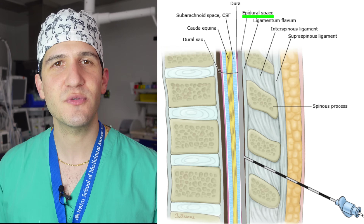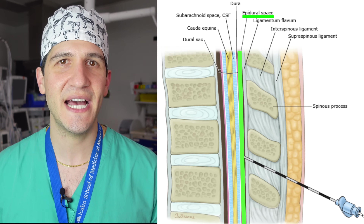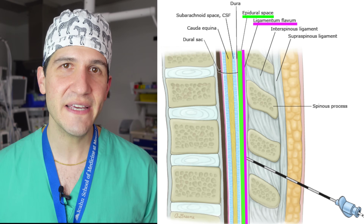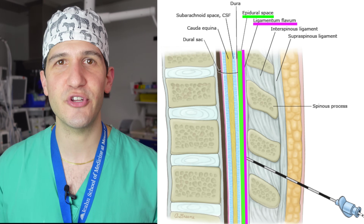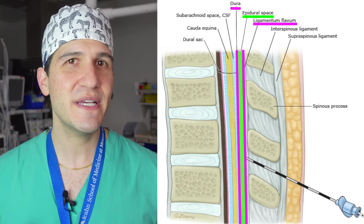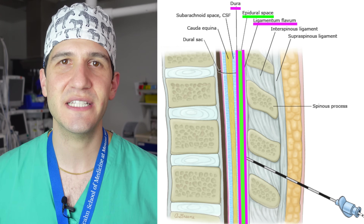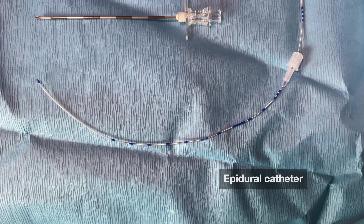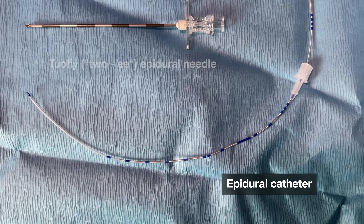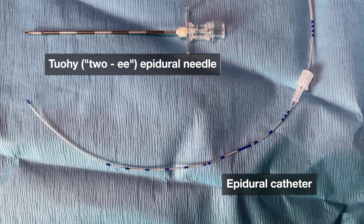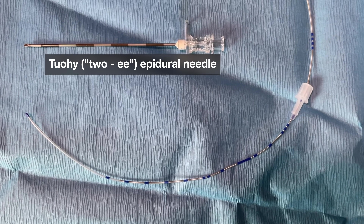The word epidural actually just refers to a space between two layers of tissue in the back, namely the ligamentum flavum and the dura. The epidural space contains a number of different things including lymphatics, some blood vessels, and nerve roots that travel through. When doctors refer to placing epidurals, what we're really referring to is placing a piece of plastic tubing inside of that space so that we can deliver medication through the tubing.